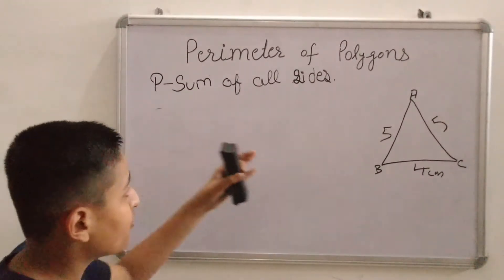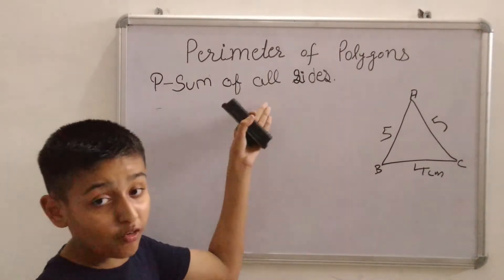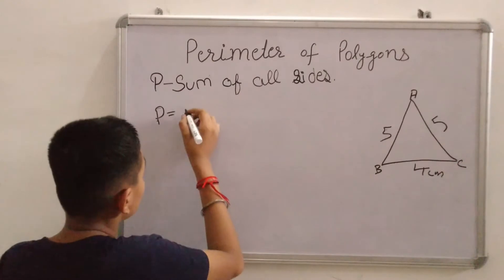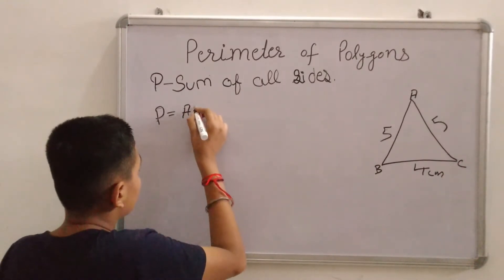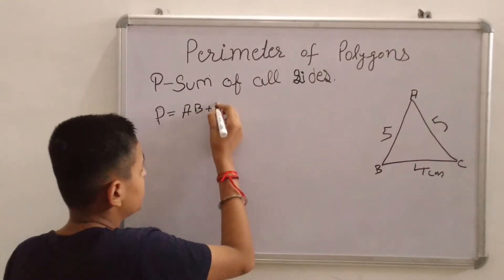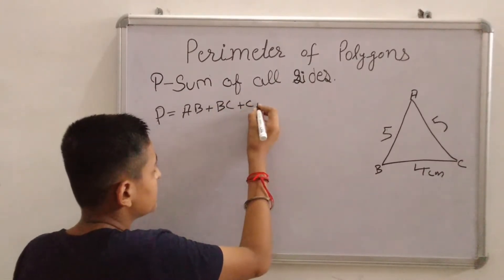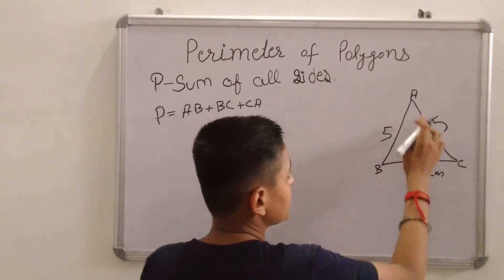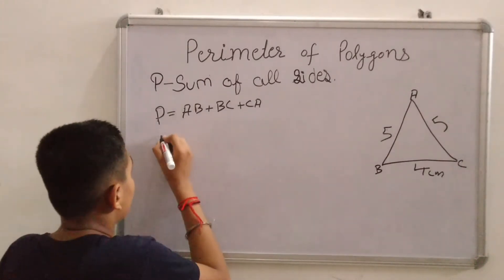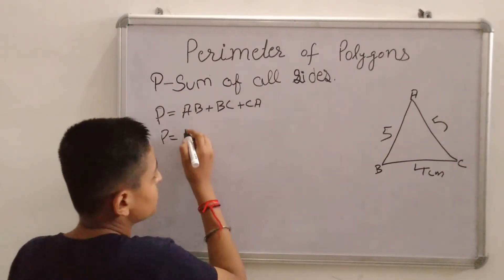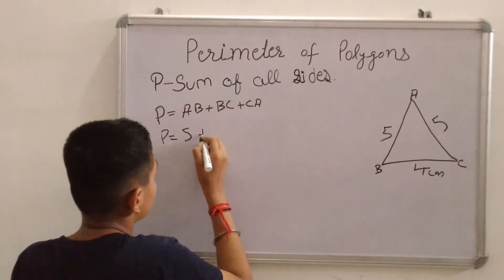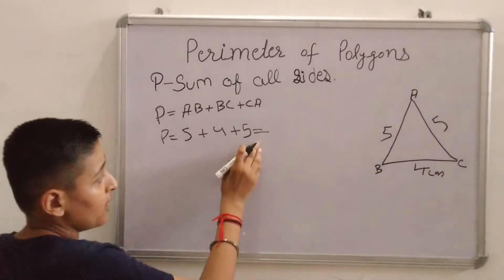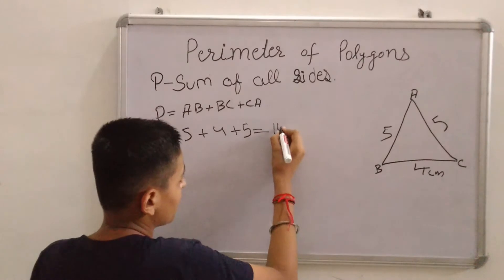What is the formula to find the perimeter? Sum of all sides. Then, perimeter equals AB plus BC plus CA. So perimeter equals 5 cm plus 4 cm plus 5 cm, which equals 14 cm.